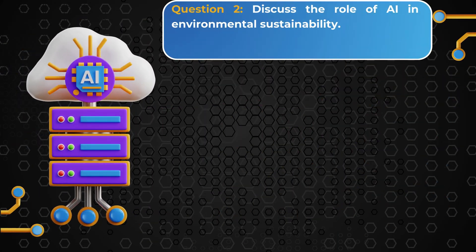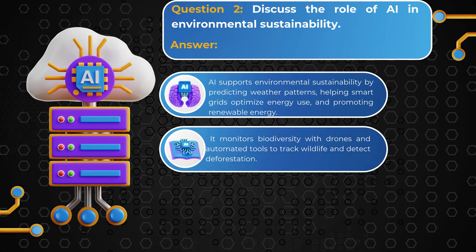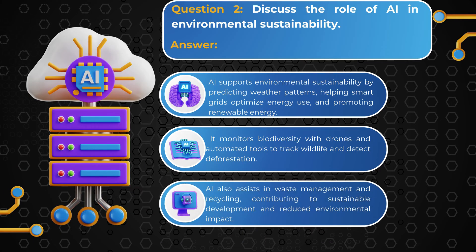Question 2: Discuss the role of AI in environmental sustainability. Answer: AI supports environmental sustainability by predicting weather patterns, helping smart grids optimize energy use, and promoting renewable energy. It monitors biodiversity with drones and automated tools to track wildlife and detect deforestation. AI also assists in waste management and recycling, contributing to sustainable development and reduced environmental impact.